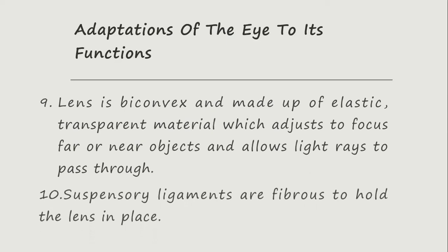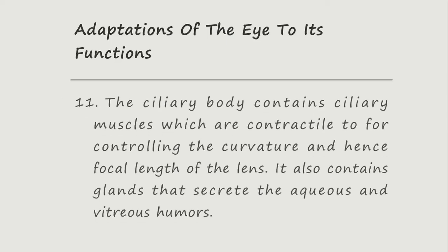There are special suspensory ligaments that hold the lens in place. The ciliary body contains the ciliary muscles, which contract to control the curvature and hence the focal length of the lens. It also contains glands that secrete the aqueous and the vitreous humour.